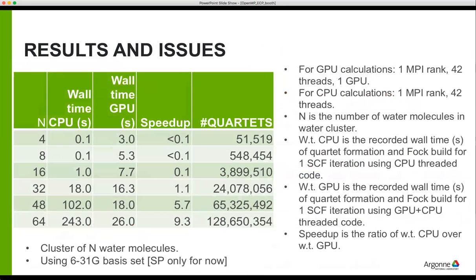Looking at results after all that work: we compared wall clock time for running the original CPU code with 42 threads on a Power9 CPU to the modified version with 42 CPU threads and one V100 for the GPU portion. Running with a variety of input sizes — ranging from 4 to 64 water molecules — we ended up seeing up to about a 9x speedup for our largest input size, GPU time over CPU. This is a really nice end result.